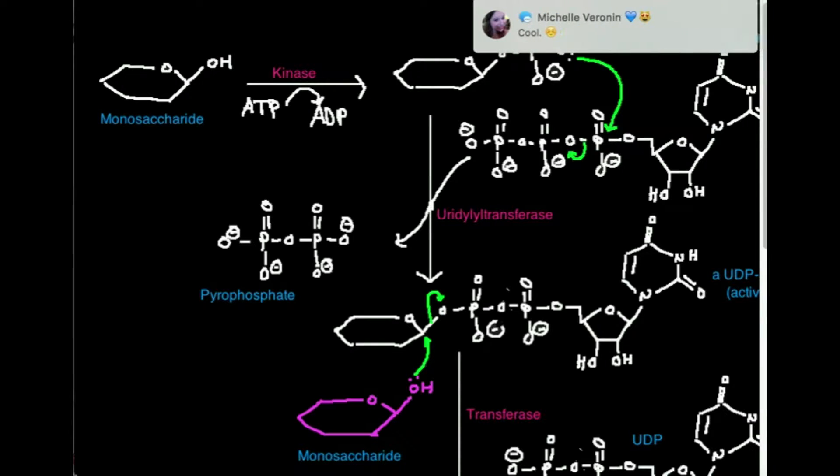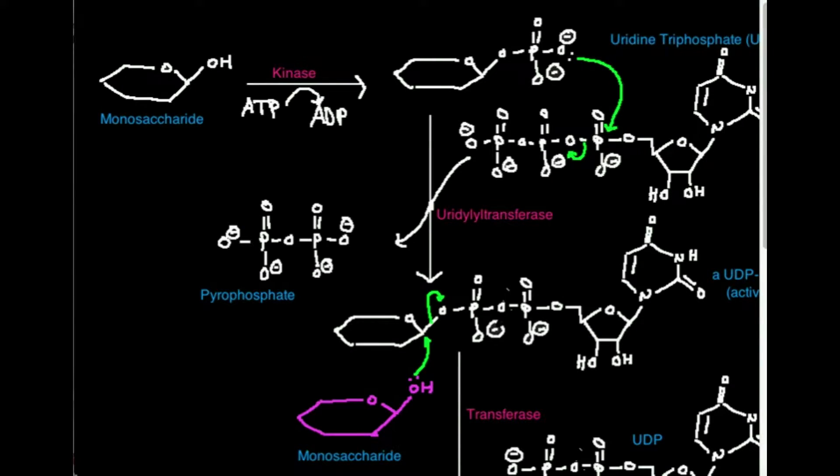And we talked about this in another video. If you are an insect, it may be desirable to put many, many N-acetylglucosamine molecules together to make chitin. And that's a polymer.